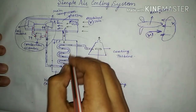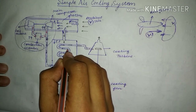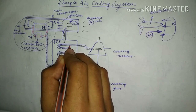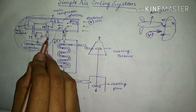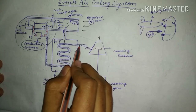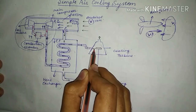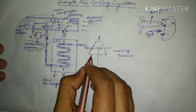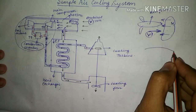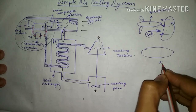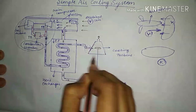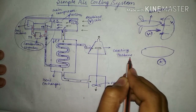The hot, highly pressurized air flows through the pipe inside the heat exchanger, while the ram air — which has lower temperature and pressure — flows around it. Heat exchange takes place, and the hot air gets cooled while passing through the heat exchanger. This cooled air is then fed into the cooling turbine.